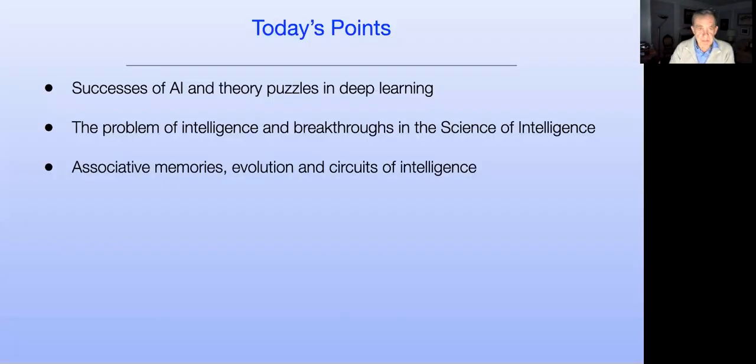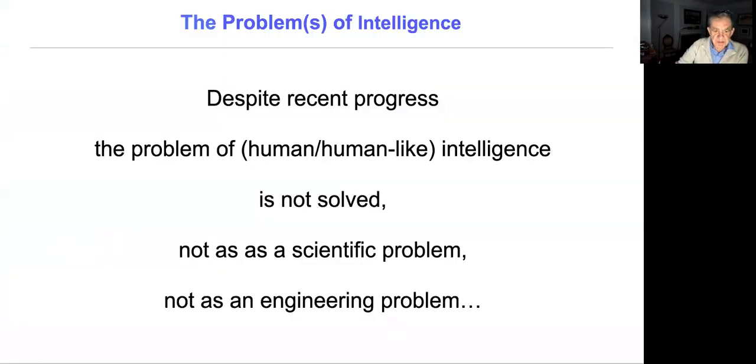Let me close this technical parenthesis and go to the next step about the problem of intelligence and which breakthroughs we need in the future. Despite all the success stories, we are still very far from human intelligence. DeepMind's AlphaZero plays superhuman chess but will not notice if there is a fire in the building. It's like one of us with advanced Alzheimer's, unable to survive without 24/7 care.